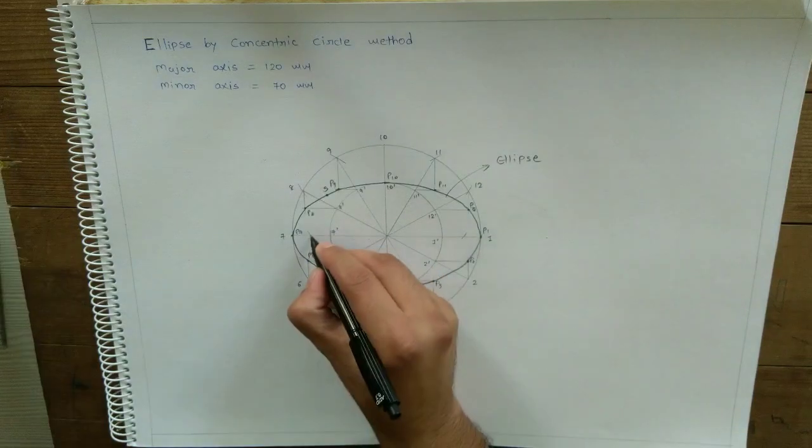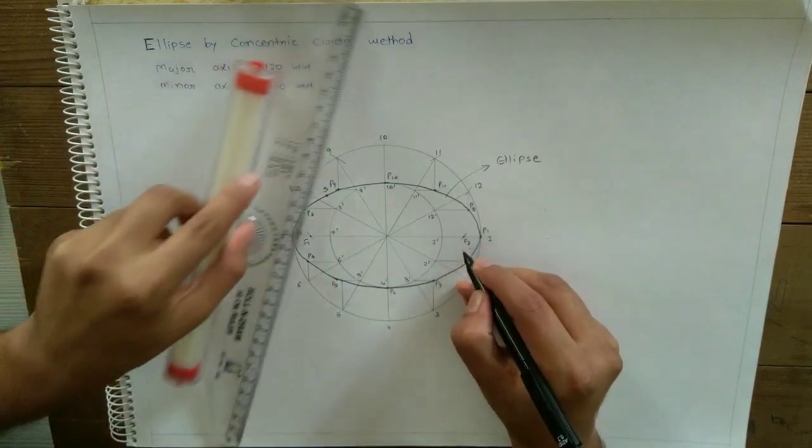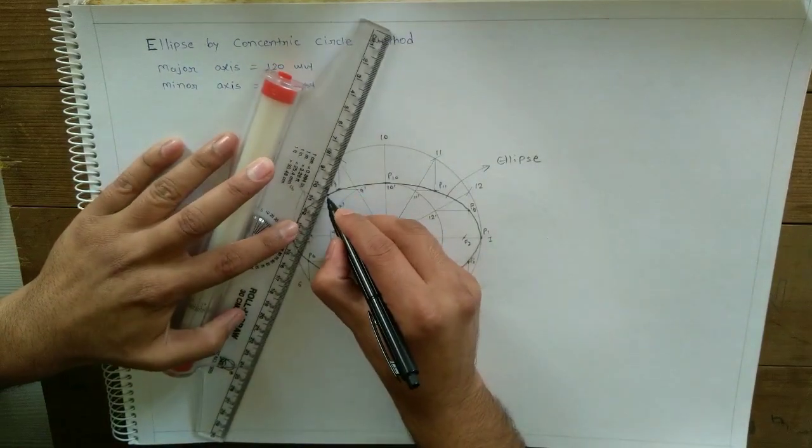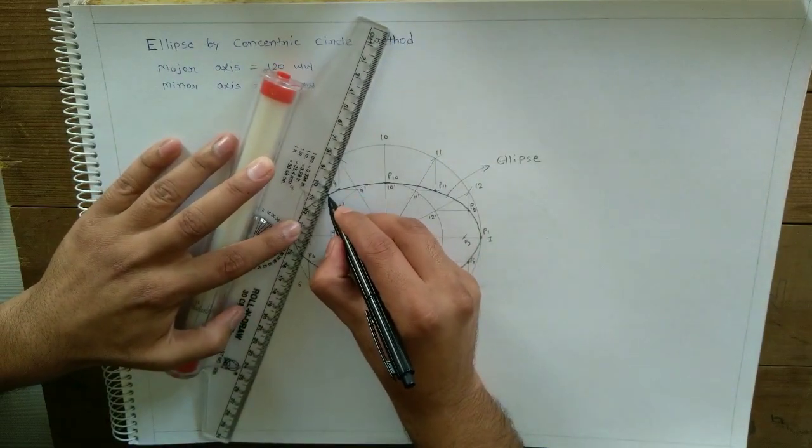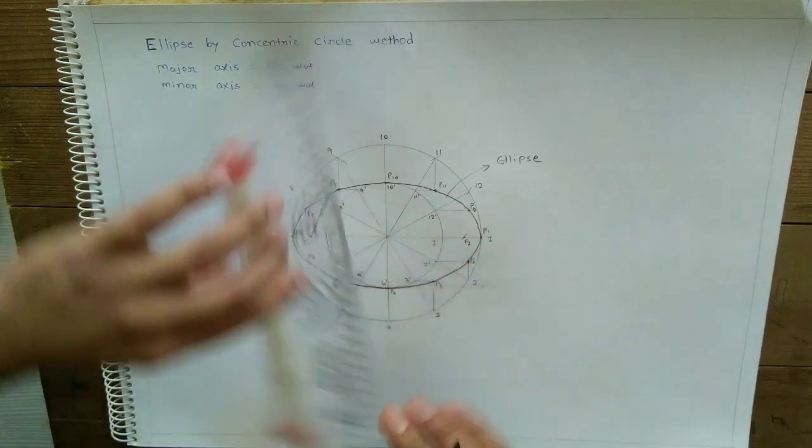So we have f1 and f2. Now join the point which we have marked first with this f1 and f2.